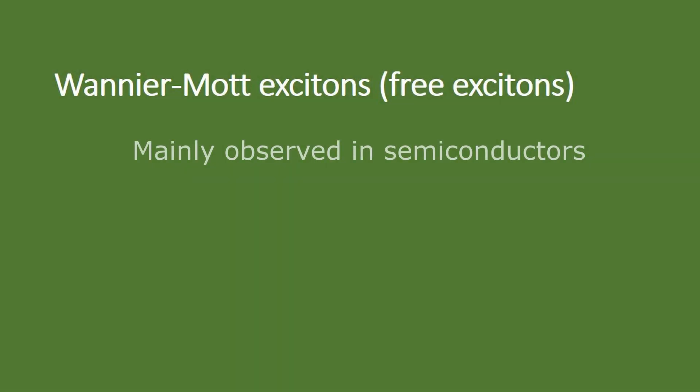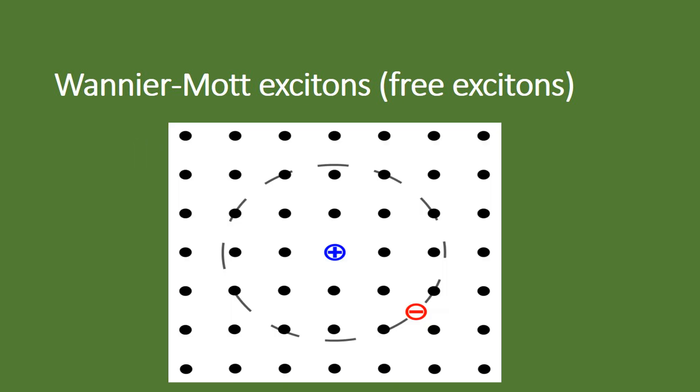The Wannier or free excitons are mainly observed in semiconductors. They have sufficiently large radius that encompasses many atoms and can move freely throughout the crystal.